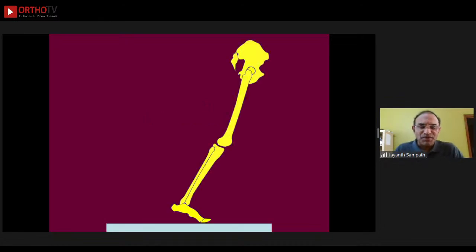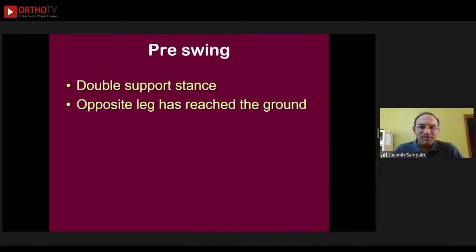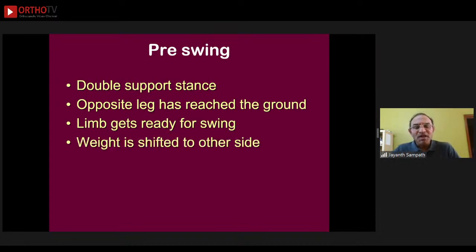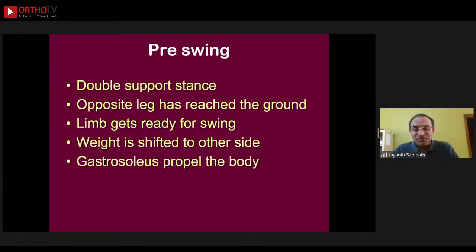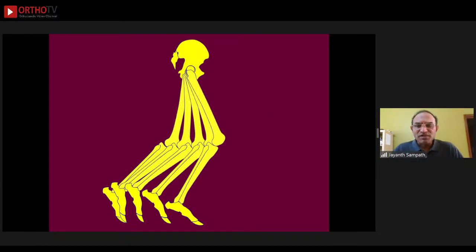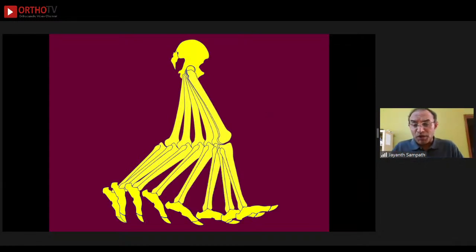The last phase of stance is pre-swing, the terminal double support phase. The opposite leg has already come and touched the ground so this leg can leave the ground. The weight is shifted to the opposite side so the ipsilateral limb can move into swing. This is the phase at which the gastrosoleus propels the body — the powerful push-off — accounting for 50 to 60% of power generation during normal gait.